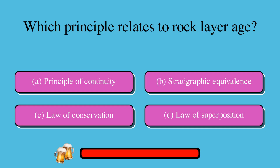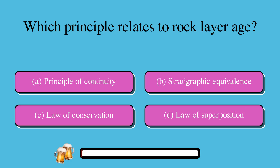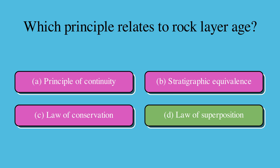Which principle relates to rock layer age? A. Principle of continuity, or B. Stratigraphic equivalence, or C. Law of conservation, or D. Law of superposition? The correct answer is D. Law of superposition.